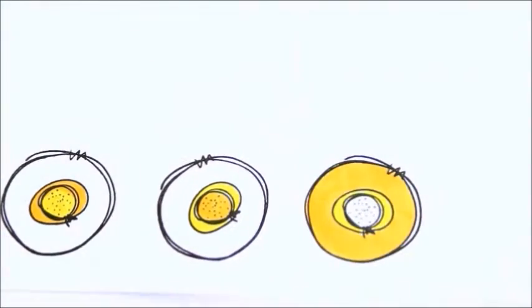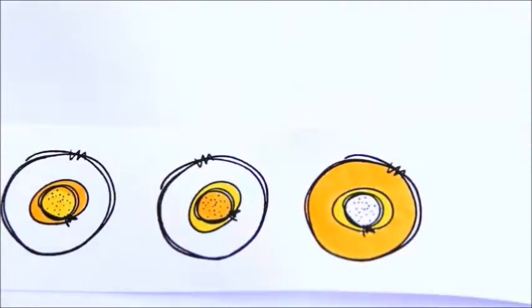Next I stamped and embossed the stylized circle flower and again colored it quickly with my Copic markers. Then I punched each one out with a circle punch.